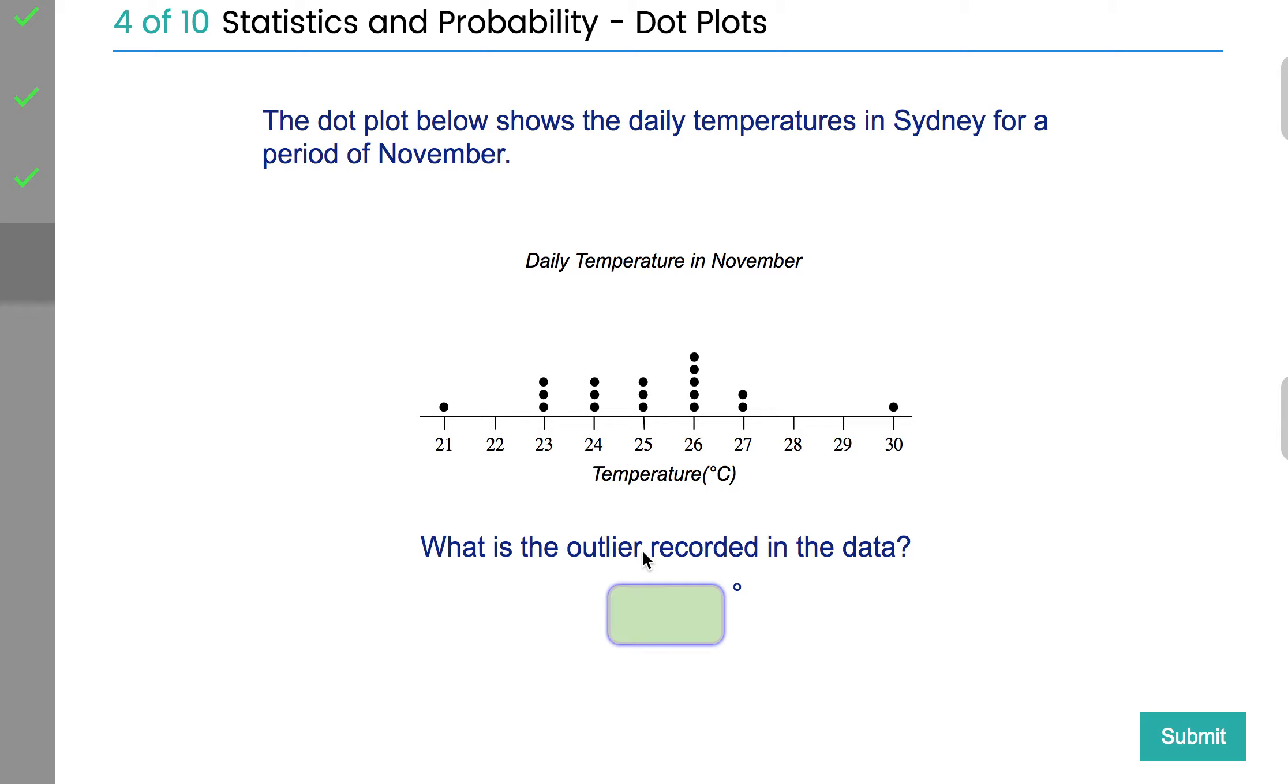What is the outlier recorded in the data? An outlier is a number that's away from the others. In this case, there are actually two outliers: 21 and 30. But the one that's furthest from the average, furthest from the middle, is 30. So 30 is the outlier here.